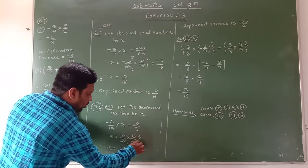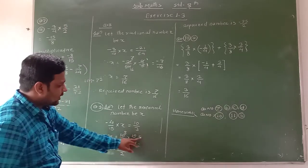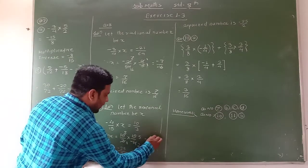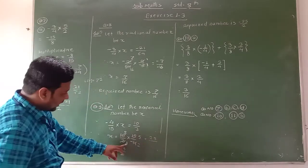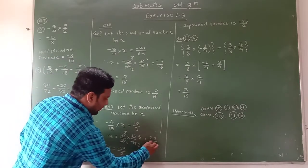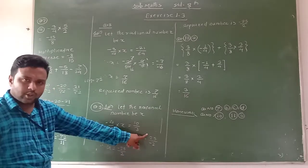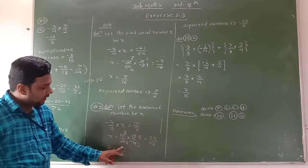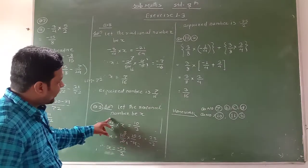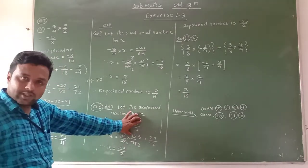We solve and simplify: 3 cancels with 15 giving 5, and 2 cancels with 10 giving 5. What remains in the numerator is 5 into 5, that is 25. In the denominator, 1 into minus 2, that is minus 2. We can write the negative sign in the numerator, so x equals minus 25 upon 2. This is the required number by which we multiply minus 4 upon 15 to get the product 10 upon 3.